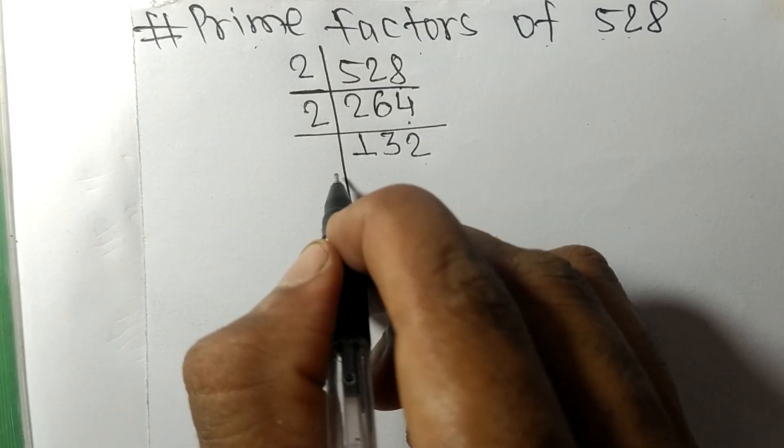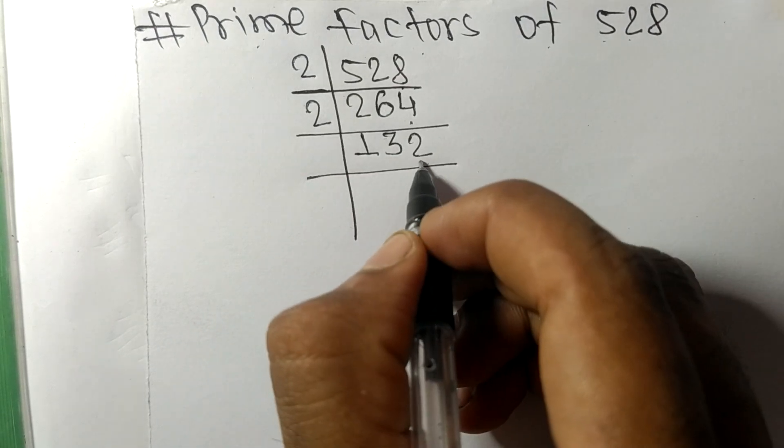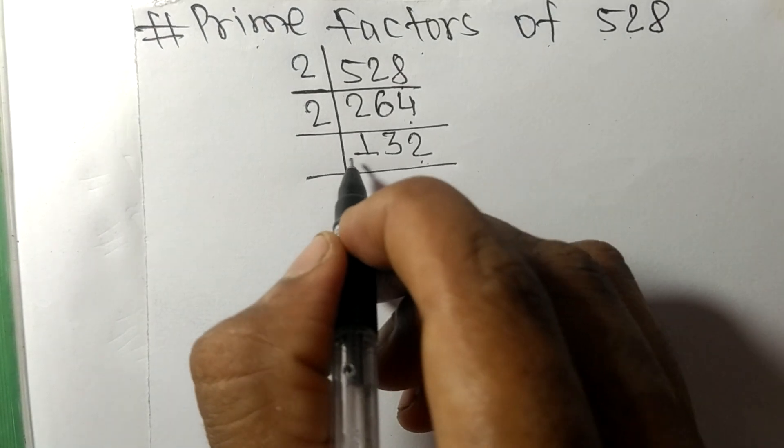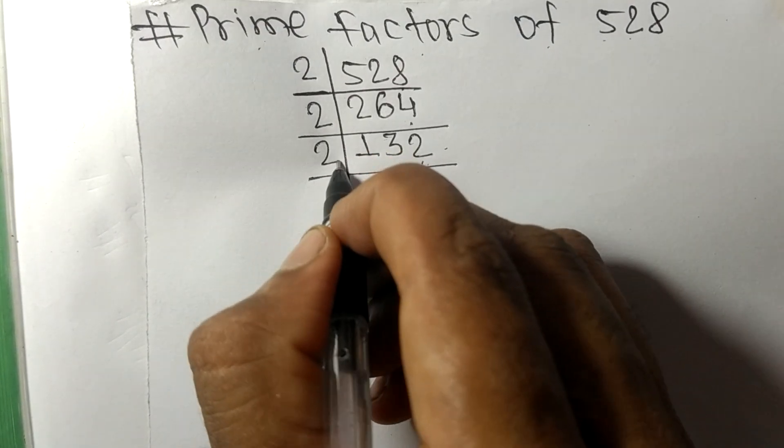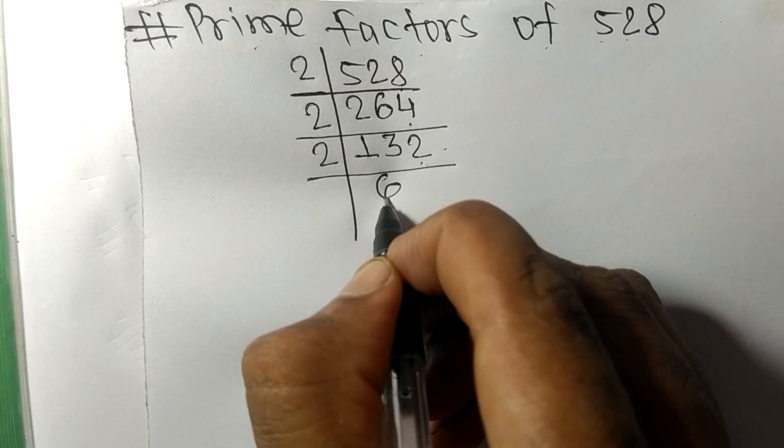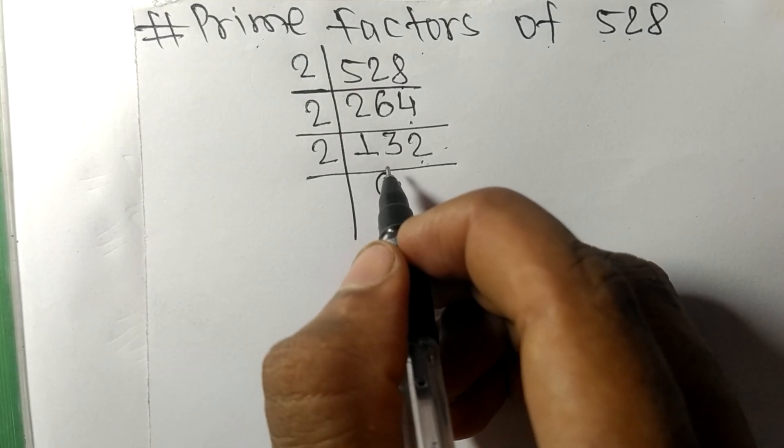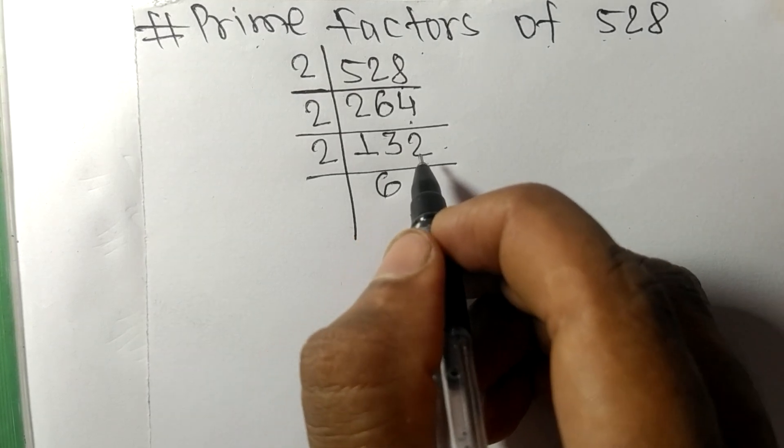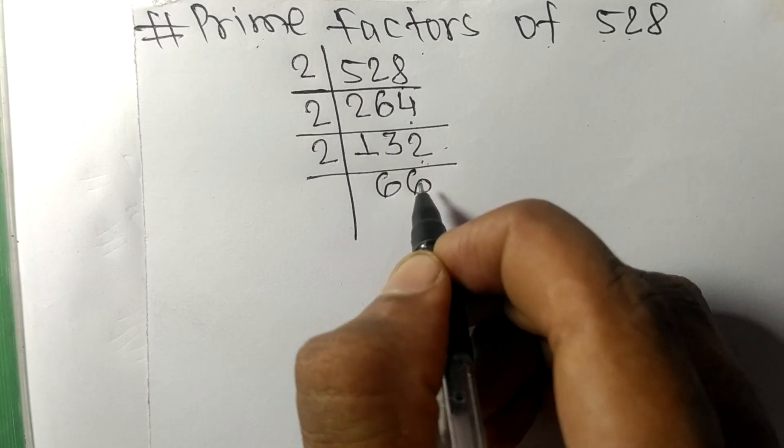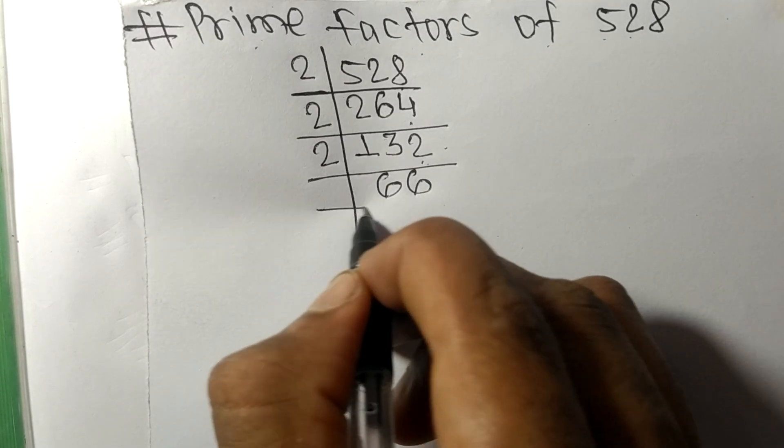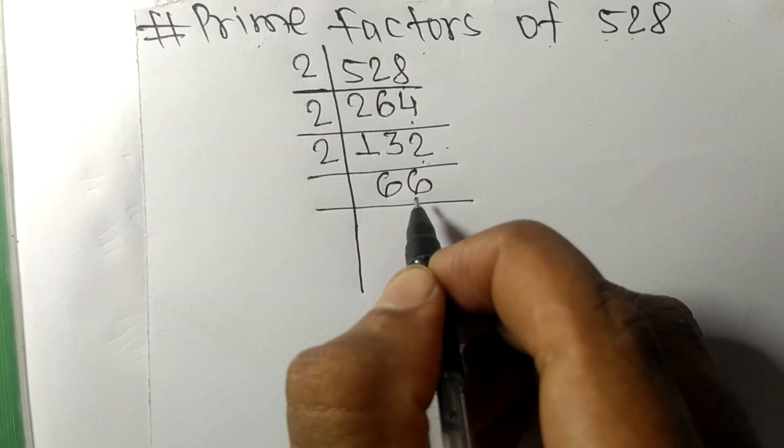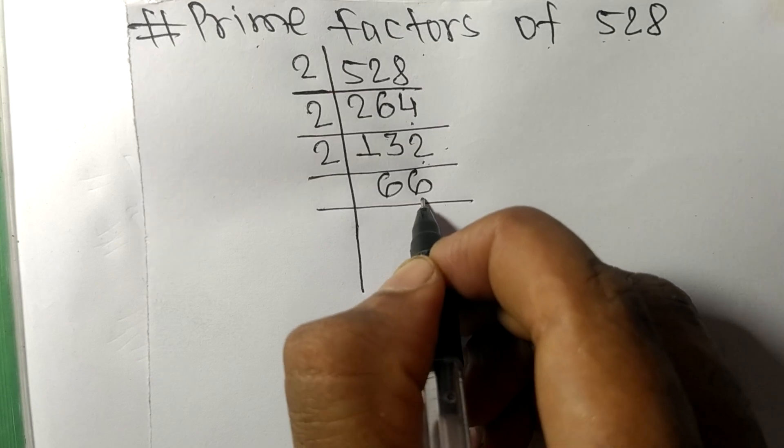We get 66, which has an even number 6 at last, so it is divisible by 2. 2 times 3 is 6, 2 times 3 is 6. Now we get 33.